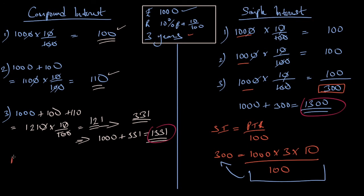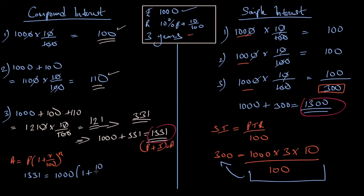A is equal to P times (1 plus R by 100). With N equal to 3 years, compound interest: N is equal to PTR by 100. A is equal to P times (1 plus R over 100) to the power N, where N is 3 years and R is 10.